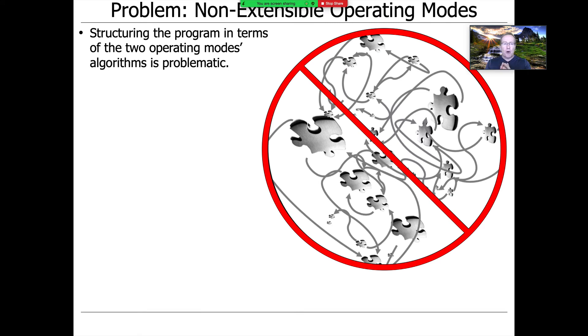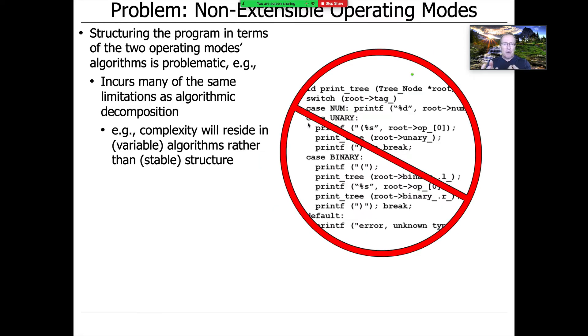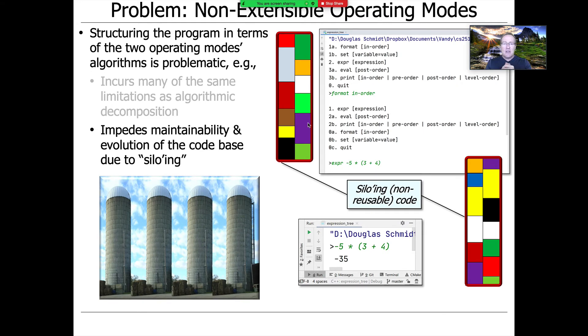Whenever you start doing a program that has multiple ways of doing more or less the same thing, you have to be very careful because you can end up with the problem of repeating yourself. You don't want to structure the program around the algorithm because then you have problems with algorithmic decomposition where small changes break stuff. Instead, you want to put the complexity in the structure itself, which should be based on classes and objects.